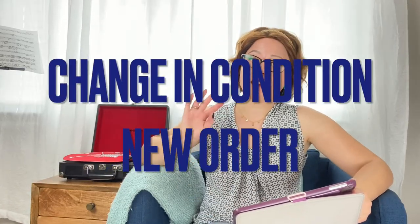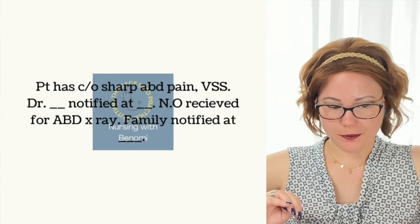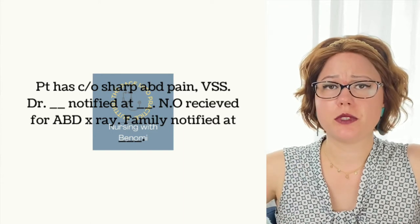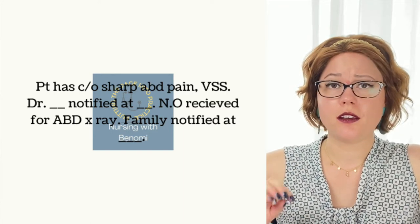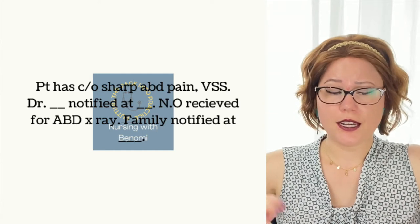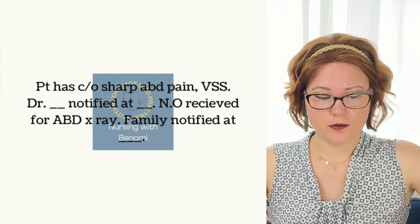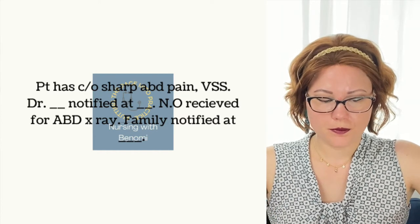If a patient has a change of condition and you notify the doctor and they give you a new order, this is what you would document: Patient has complaint of sharp abdominal pain. Vital signs stable. Dr. Oliver notified at 1800. New order for abdominal x-ray received. Family notified at whatever time. You always have to document family notification of any new order.